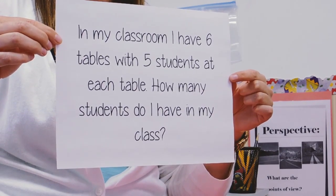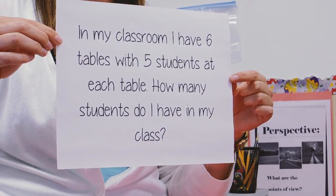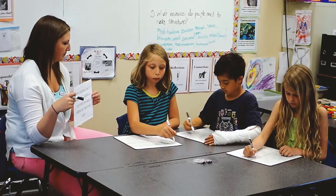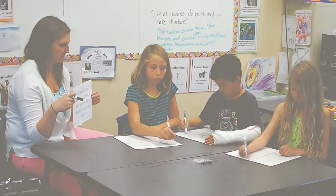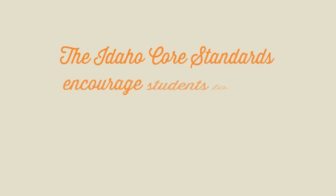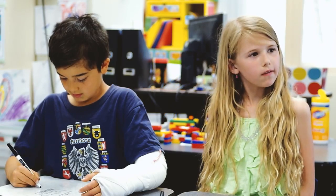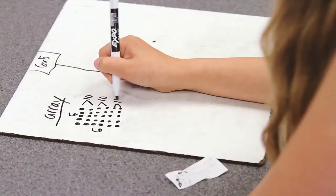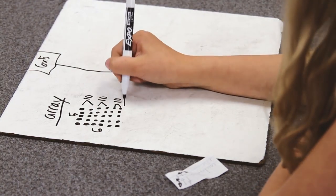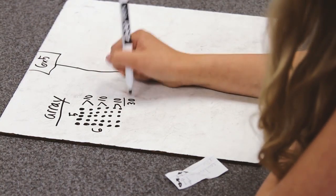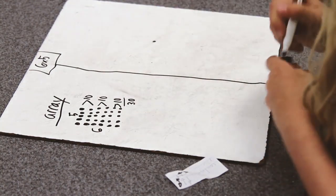I used an array. The way I saw six times five was I did six down and five rows across. I like arrays because they make problems easier to solve.